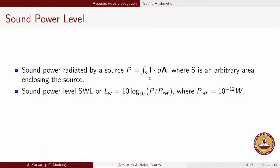Sound power level expressed in dB: just as sound pressure was originally defined in Pascals and then transformed to a decibel scale, sound power is also transformed to a logarithmic scale. Sound power level, abbreviated as L_W, is given by 10 log base 10 of P divided by P_ref, where P is calculated from the surface integral formula and P_ref is the reference value of 10^-12 watts.